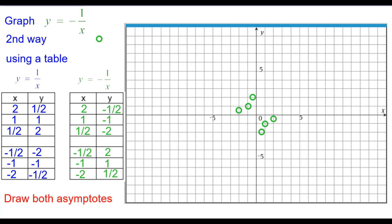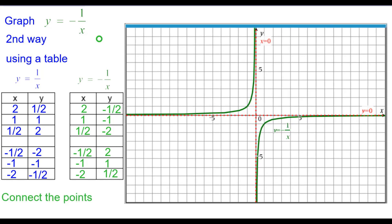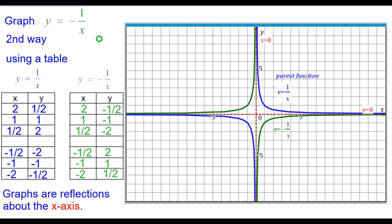Again, we're going to go ahead and draw in both asymptotes, which include the x and y-axis. And connecting the dots, we get the graph of the hyperbola y equals the opposite of 1 over x. Comparing that to the parent function, you can see that the graphs are reflections about the x-axis.